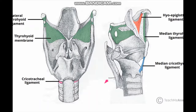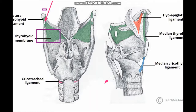Other supporting structures of the larynx include membranes and ligaments. This greenish one is the thyrohyoid membrane, and the one present laterally is the lateral thyrohyoid ligament. This one is the cricotracheal ligament joining the cricoid cartilage to the tracheal rings. The median cricothyroid ligament joins the cricoid with the thyroid cartilage, the median thyrohyoid ligament joins the thyroid cartilage to the hyoid bone, and the hyoepiglottic ligament joins the hyoid bone to the epiglottis.